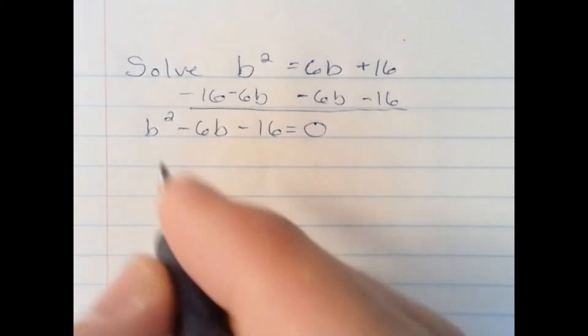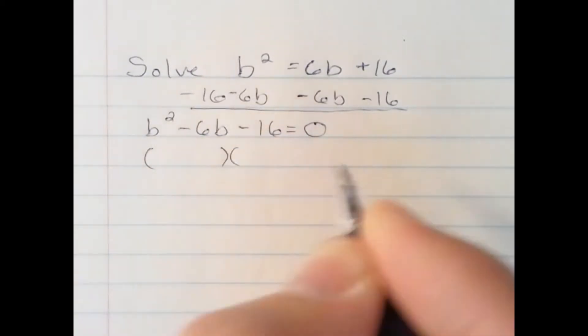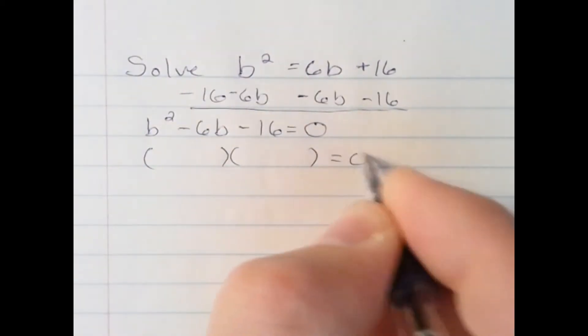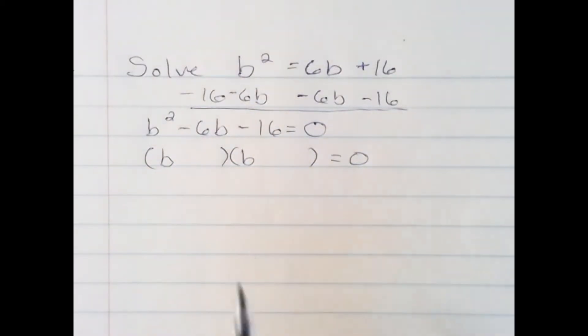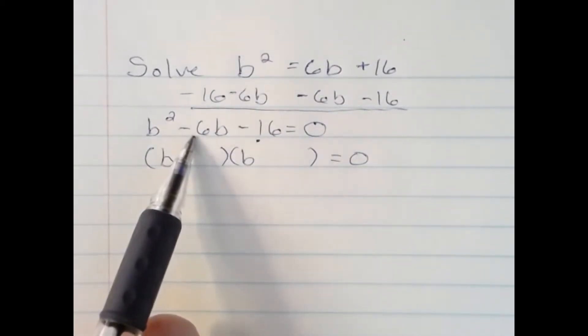Now this should be factorable. I have the two binomial terms that it will break into, b and b. And the question I ask myself is, what factors of negative 16 add up to negative 6?